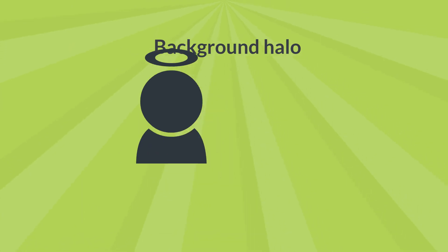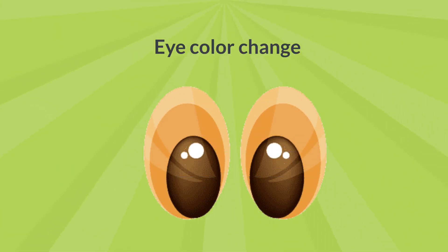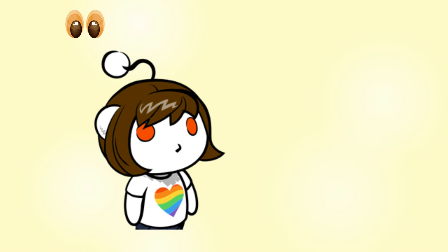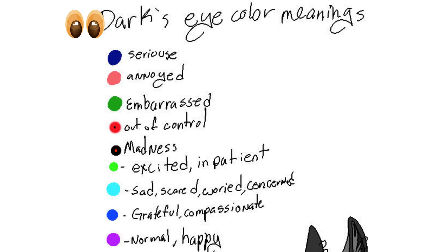Background Halo: The holy halo has many iconic meanings. The most important of these is the status of holiness, purity, and the chosen one. Eye Color Change means that the character's eyes change color in response to certain stimuli — for example, brown eyes turn bright red and the round pupil stretches into a slit. Different eye colors have various meanings.